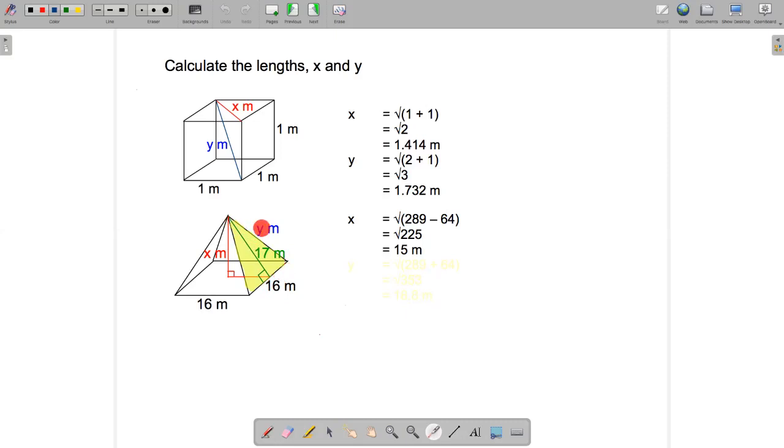Pythagoras says y squared plus 8 squared. Sorry, I'm doing it backwards. 17 squared plus 8 squared is equal to y squared. y is the hypotenuse in this case. So y must be the square root of 17 squared plus 8 squared. 17 squared is 289. 8 squared is 64. If I add those two numbers together, I get 353. Unfortunately, 353 is not a perfect square. So if we take the square root of that, it comes to approximately 18.8 to one decimal place.